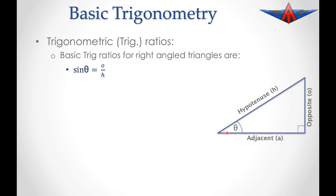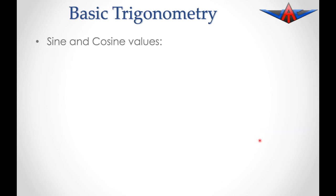The sine of the angle is calculated by dividing the opposite length by the hypotenuse. Similarly, cosine of the angle is equal to the adjacent length divided by the hypotenuse length. And the tangent relationship involves the opposite side length divided by the adjacent side length.